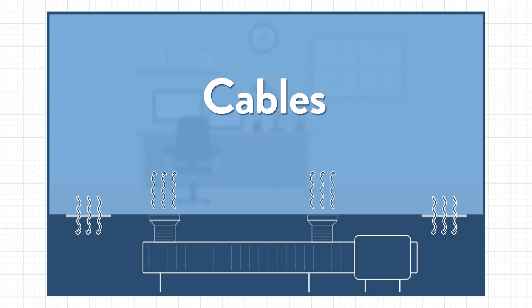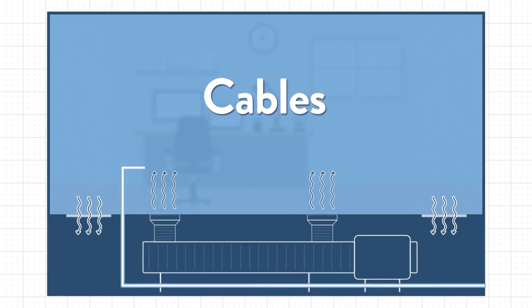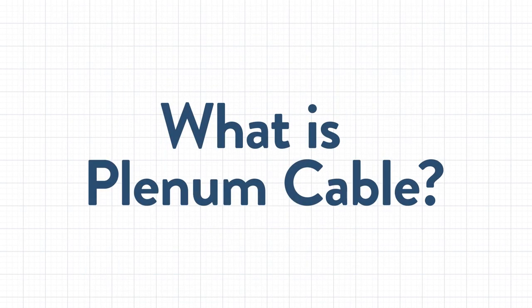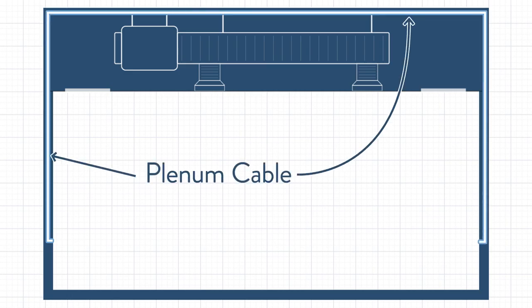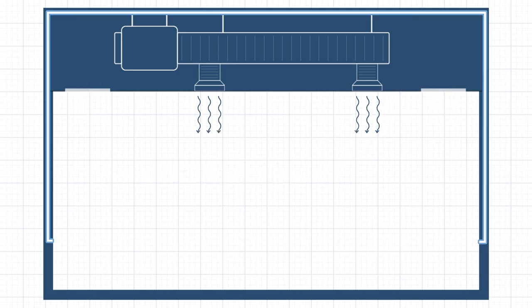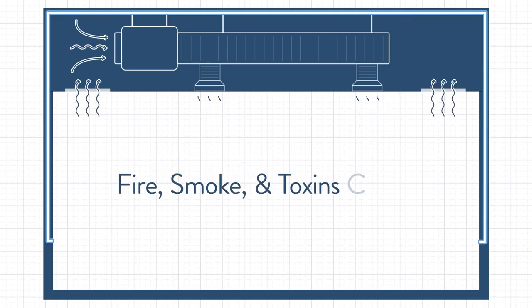It is becoming increasingly common to see communications cables like networking cables also utilizing the plenum, which brings us to what is plenum cable. Plenum cables are cables designed specifically to be used in plenum spaces. Because the plenum is used for air circulation, it is critical that anything used inside the plenum not impact air quality or increase the danger of spreading fire.